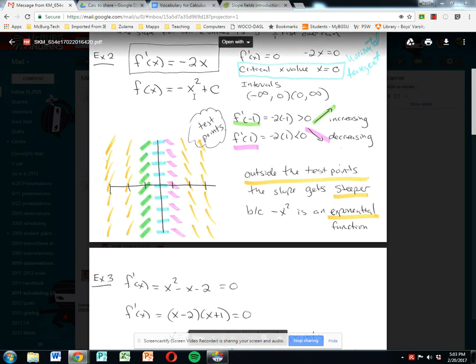Obviously, -2 times 0 is 0. Now, the slope at 1 is -2 because -2 times 1 is -2. The slope out here is -4 because -2 times 2 is -4. The slope out here would be -6. So each subsequent one, the farther we get from the critical point, gets steeper.